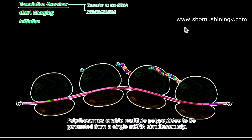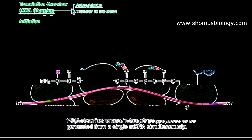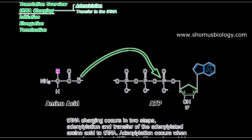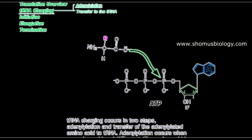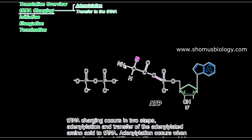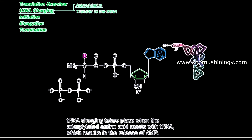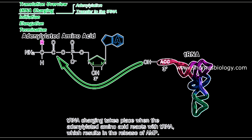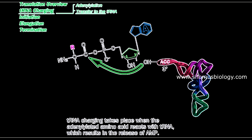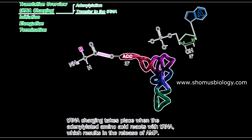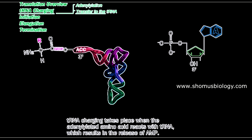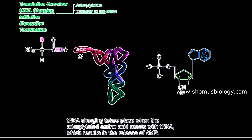Now, the process of translation begins with tRNA charging. The very first step is the adenylation of the amino acid: ATP and amino acid react to form an adenylated amino acid. Then the adenylated amino acid transfers itself to the CCA 3 prime hydroxyl arm of the tRNA. This is how the tRNA is charged, and we call this state a charged tRNA.